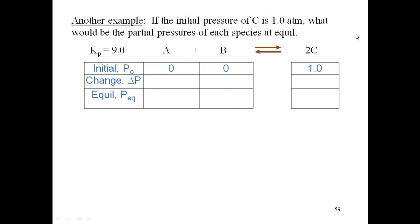Let's look at another example. This time I'm going to use partial pressures instead of Kc. Initial pressure of C is one atmosphere. What would be the partial pressure of each species at equilibrium? I have A plus B gives me 2C. Kp is 9.0. Now I mentioned to you earlier and said I'm not going to make you go from Kc to Kp. If I give you atmospheres, then I'm going to give you Kp. If I give you molarity, then I'm going to give you Kc. But I do want you to realize that Kp and Kc are not equal.